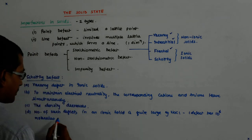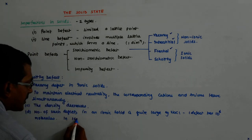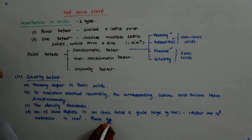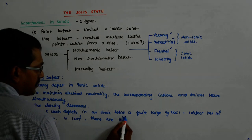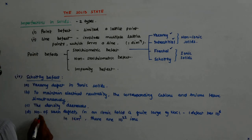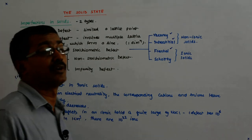And what happens? In one centimeter cube, there are 10 to the power 22 ions. Defect per 10 to the power 6 ions actually. There are 10 to the power 22 ions in one centimeter cube.